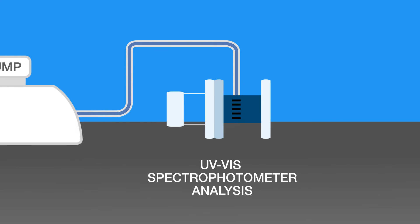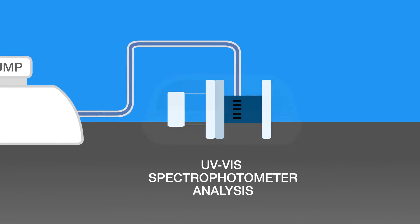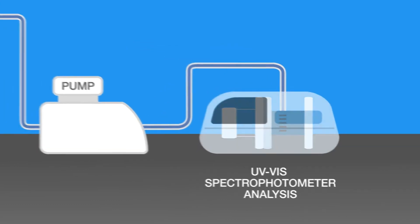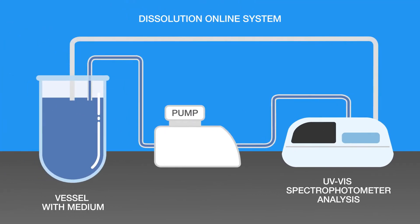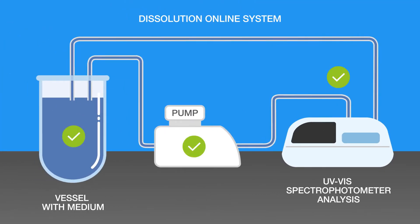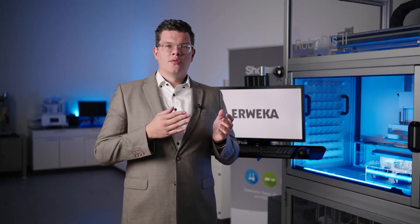This is the next step of dissolution automation. The dissolution test and its UV-Vis analysis is done automatically, and besides setting up the dissolution tester and the test inside the software, the steps from the dissolution test to the analysis results are automated.